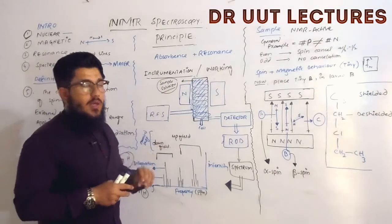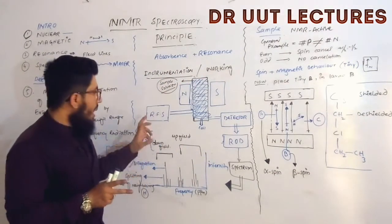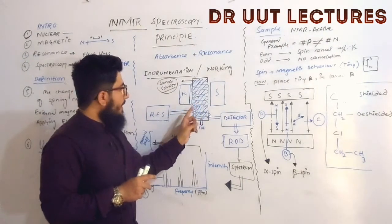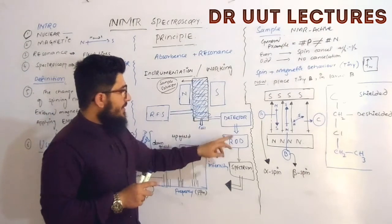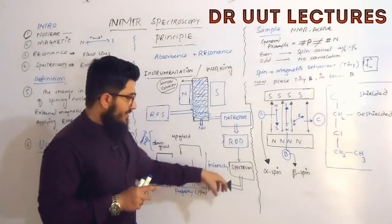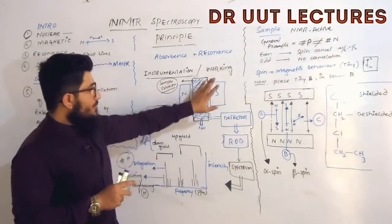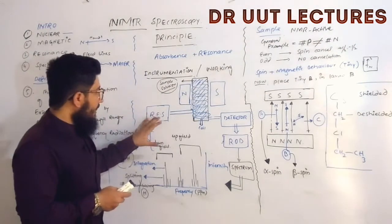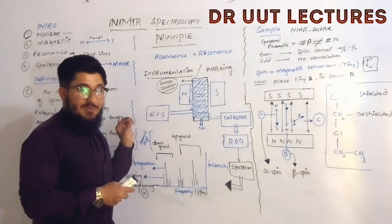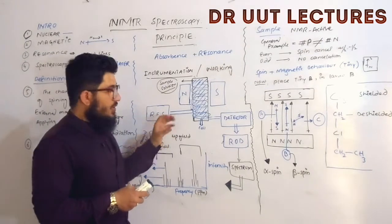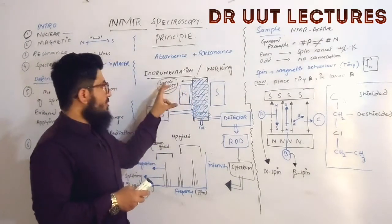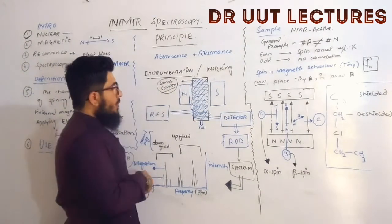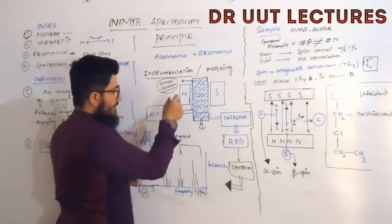For instrumentation and working: the instruments include the radio frequency source (RFS), sample holder coil, magnets, detector, and read-out device which gives us a spectrum. The radio frequency source provides a specific range of radiation for the sample, which is present in solution form.